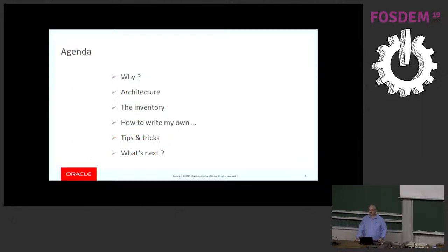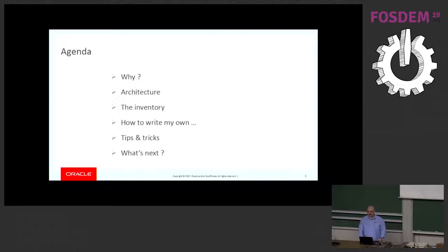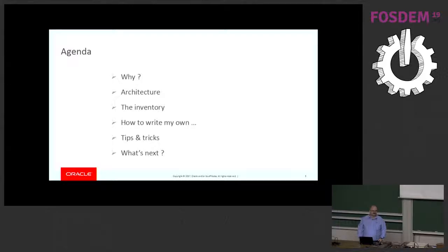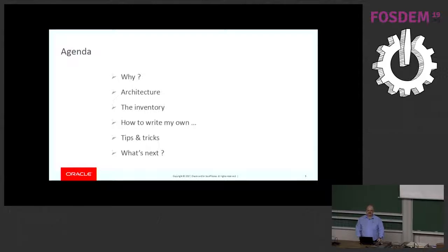Our agenda: first of all, the reasonable question — why do we need another infrastructure inside the server? We already have the plugins, so why? Then I'm going to go over the architecture — basically how we are trying to address the why question. And then I'll do the inventory, basically what services and what interfaces we have added to that infrastructure. And then I'll try to explain how to write your own component and your own service.